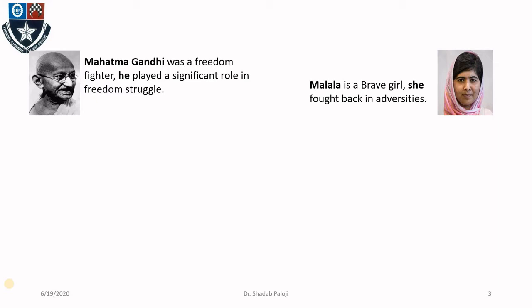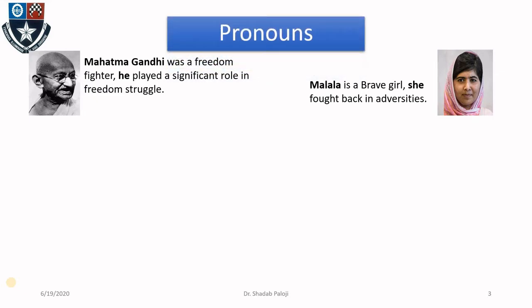Now notice the highlighted words in the first statement. He is being referred to for Mahatma Gandhi. Likewise, in the second statement, she is being referred to for Malala. Both Malala and Mahatma Gandhi are proper nouns, but he and she are not nouns.